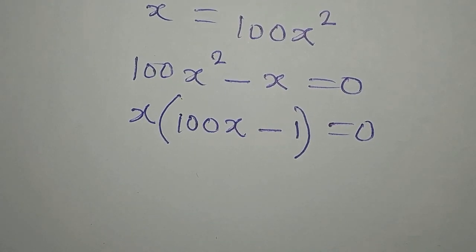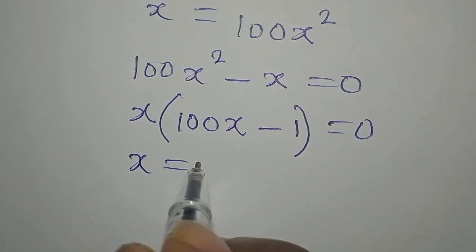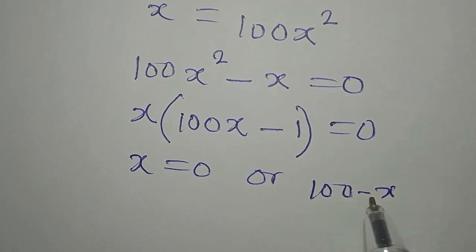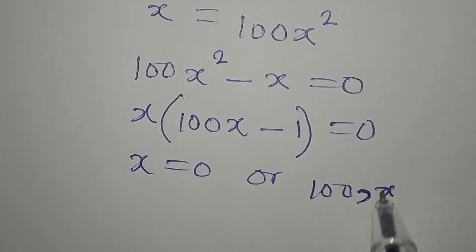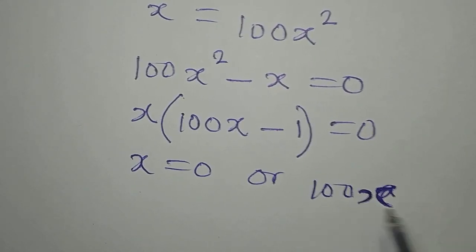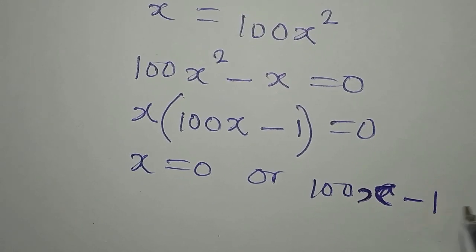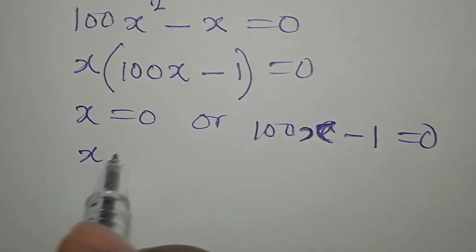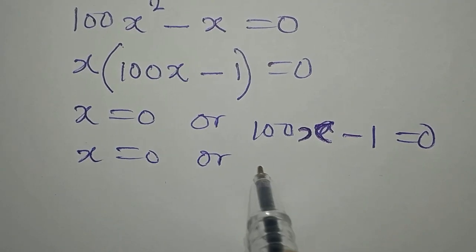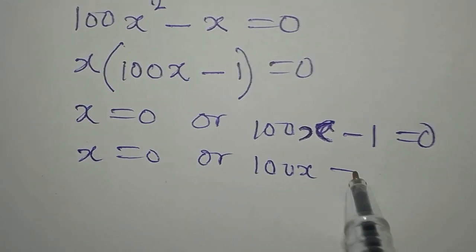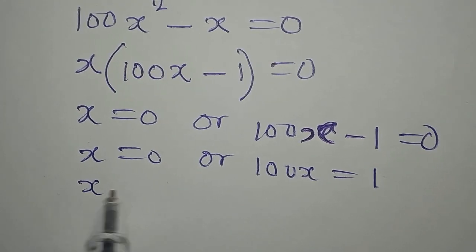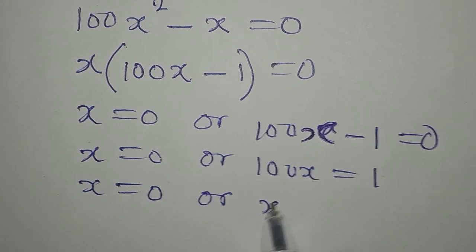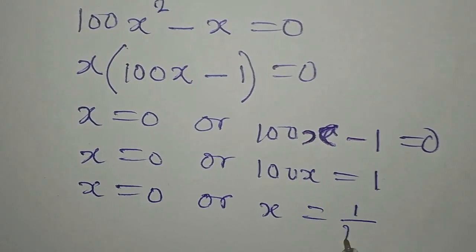Now we apply zero product property. It is either x is equal to 0, or 100x minus 1 equals 0, which gives 100x equals 1. So x equals 0 or x equals 1 over 100.